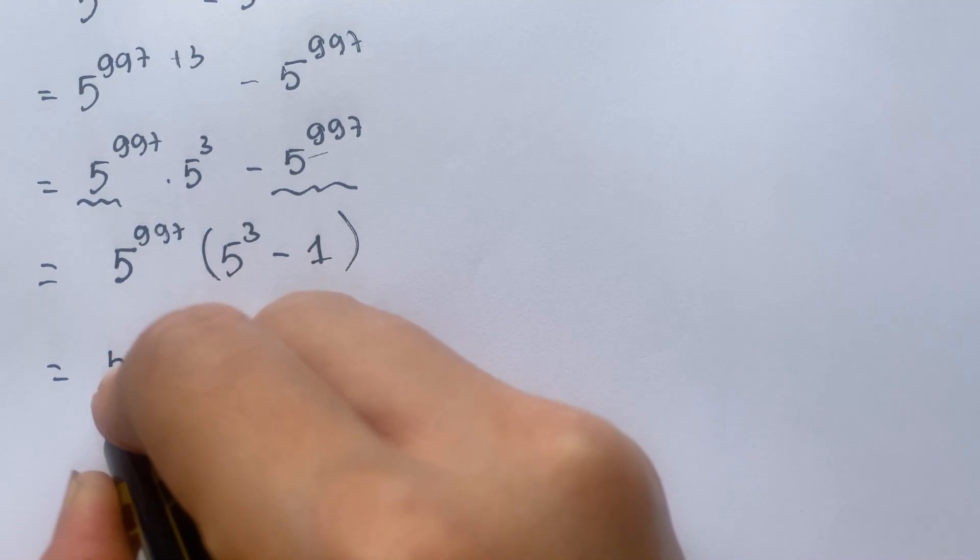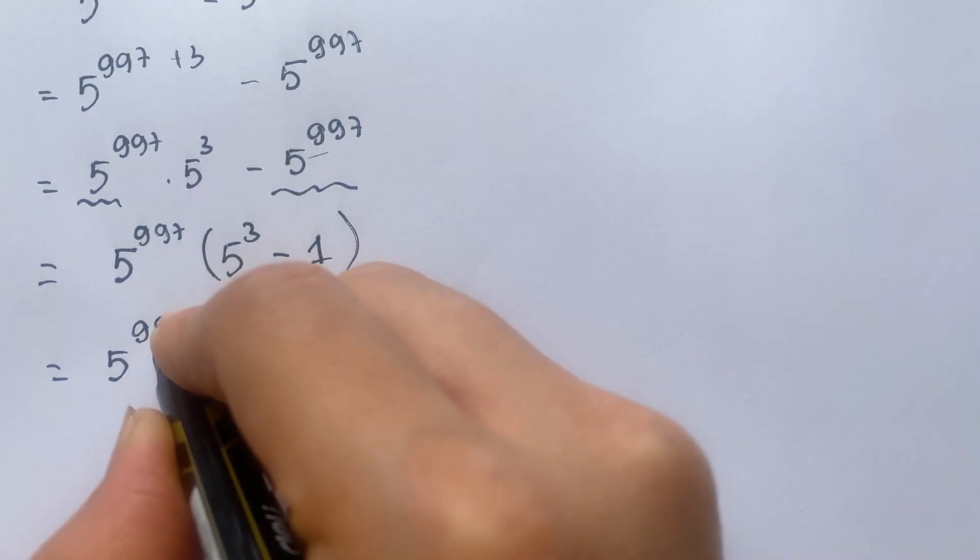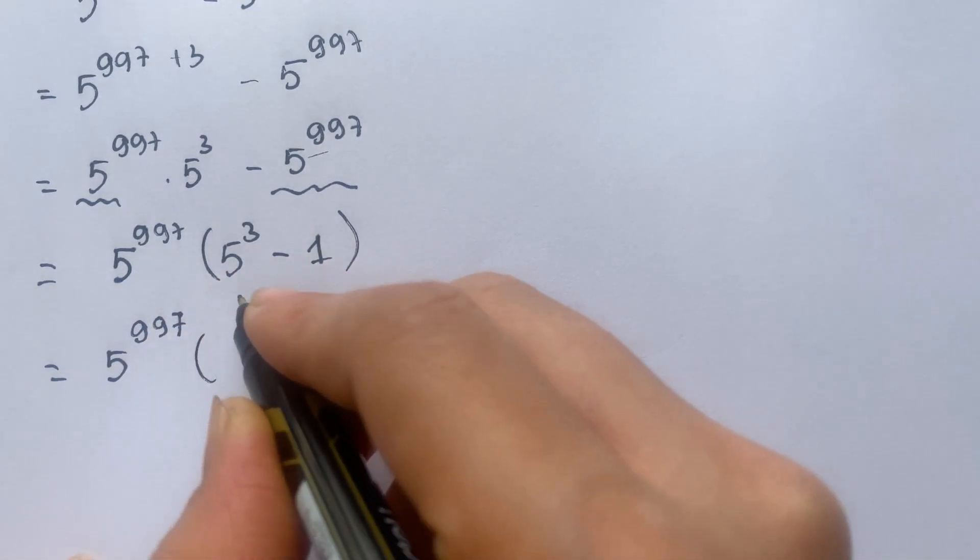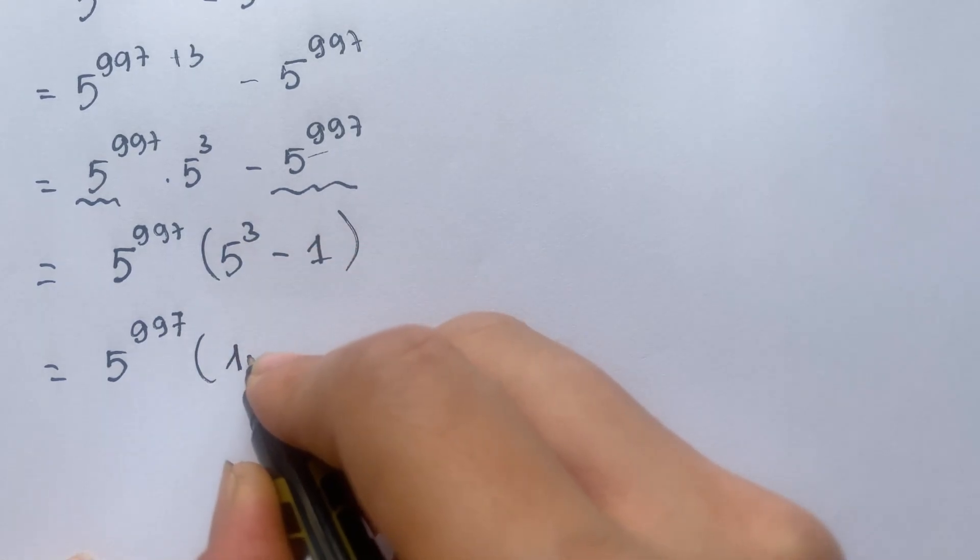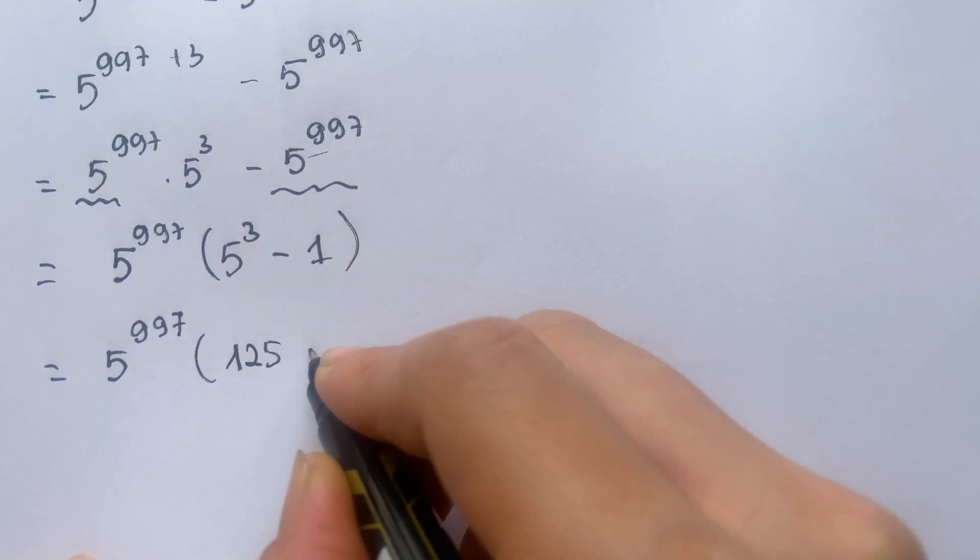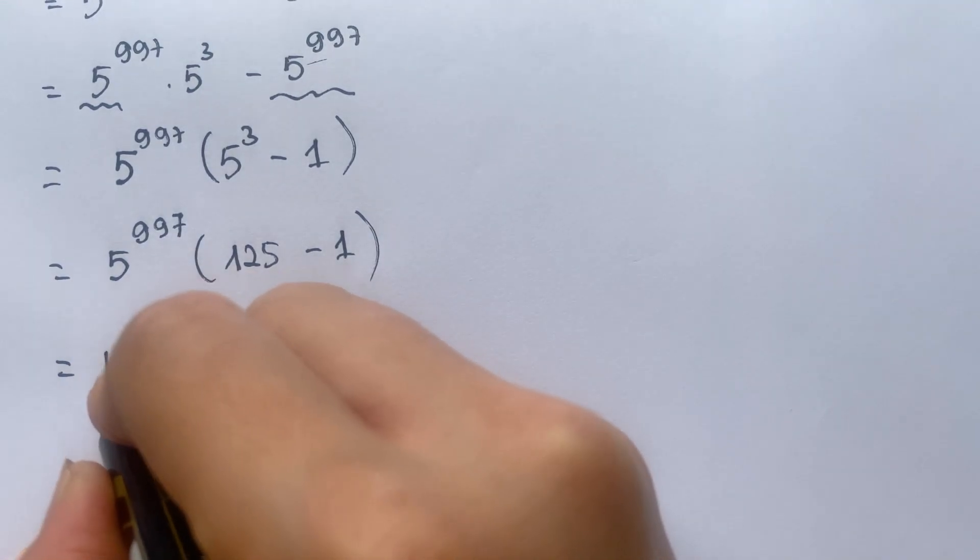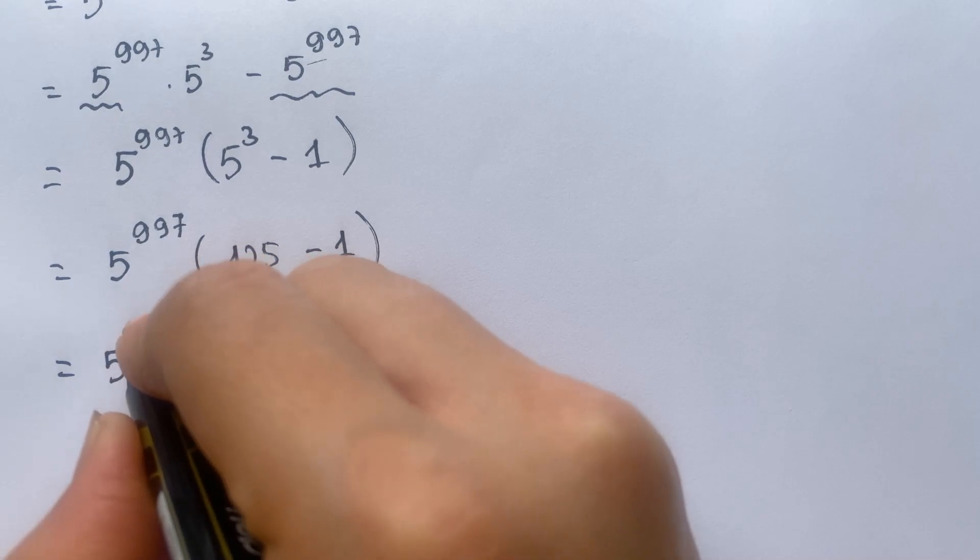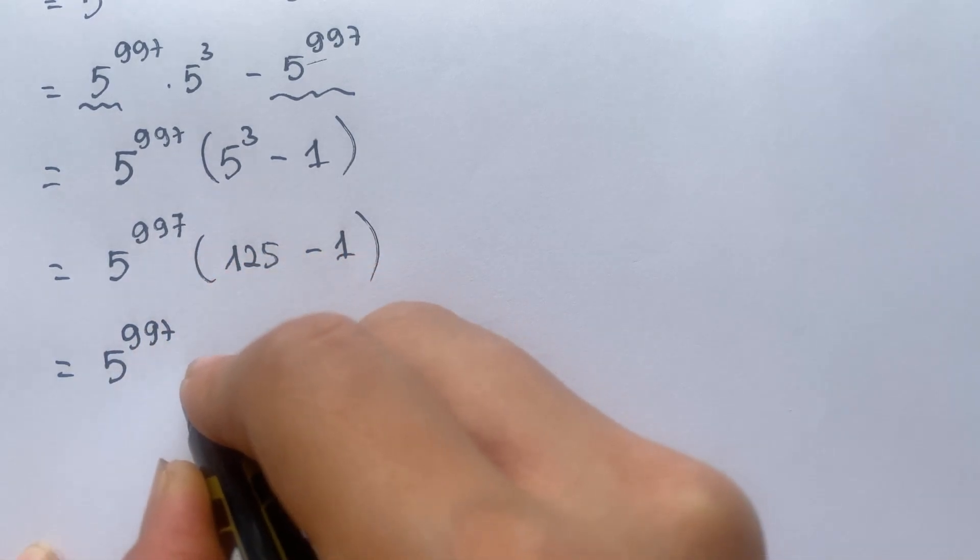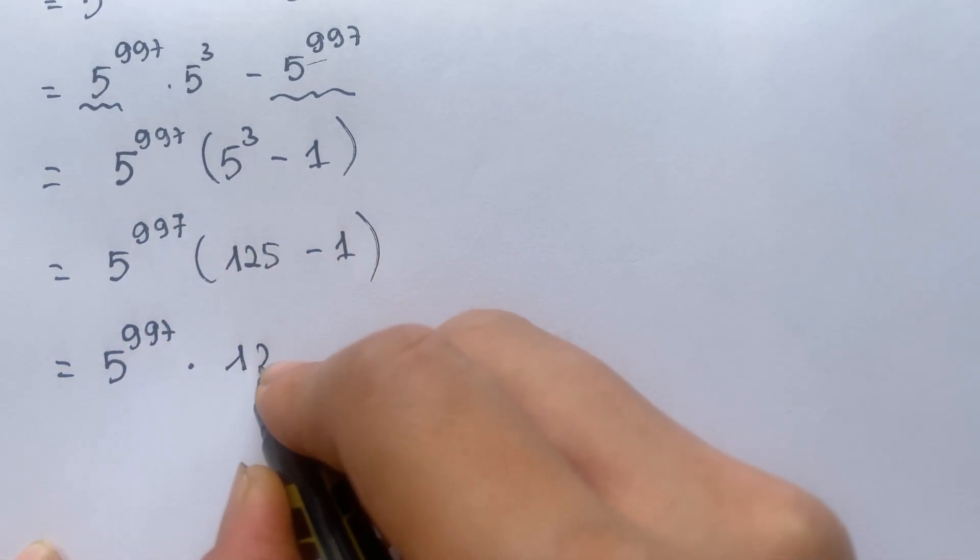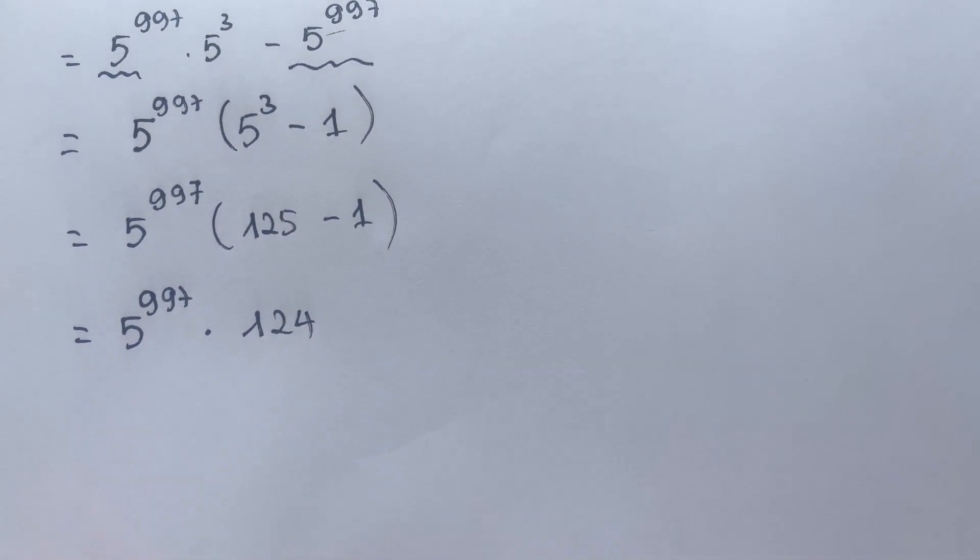And it also equals 5 to the 997, 5 to the 3 is equals 125 minus 1, right? And then, you can say, 5 to the power 997 times 124, yes?